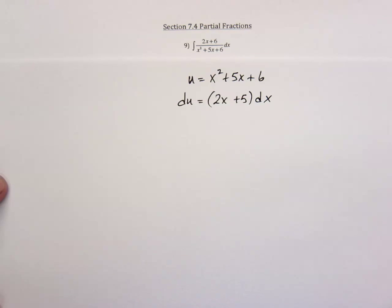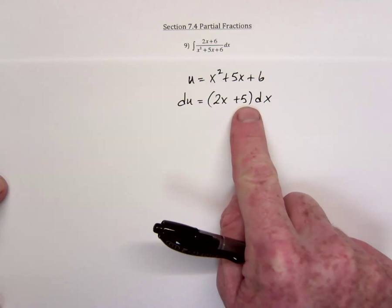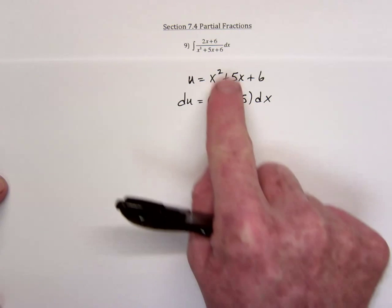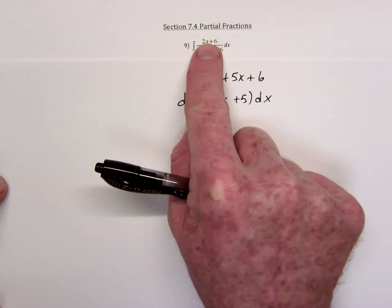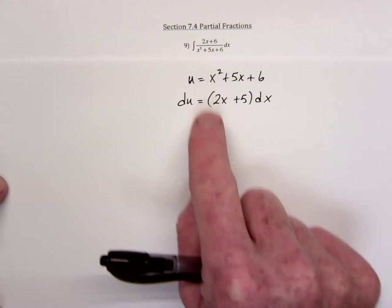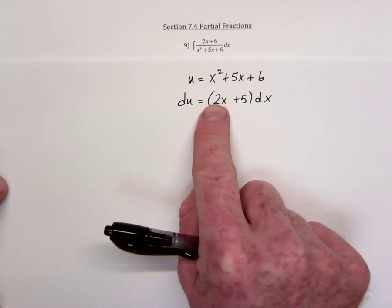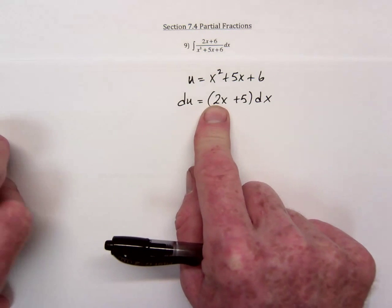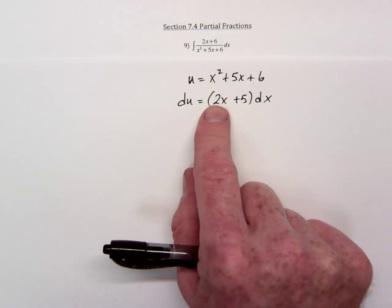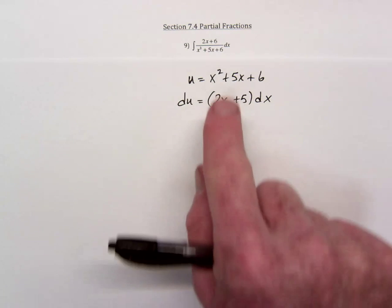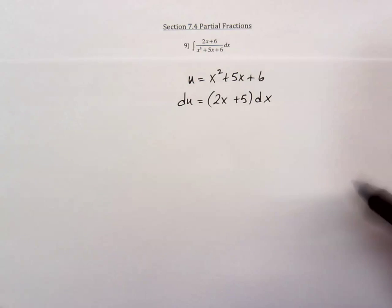For u substitution to work, this thing right here, 2x plus 5 dx, would have to match this right here. And the only way that you can manipulate this is by multiplying or dividing by a constant. Since there's no way to multiply or divide by a constant and get this 2x plus 5 to turn into a 2x plus 6, the u substitution is not going to work.